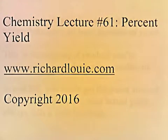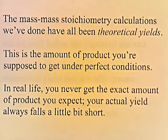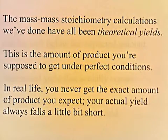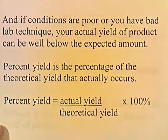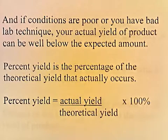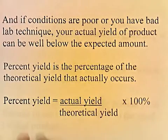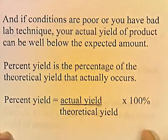Chemistry Lecture Number 61: Percent Yield. The mass-mass stoichiometry calculations we've done have all been theoretical yields — the amount of product you're supposed to get under perfect conditions. In real life, you never get the exact amount of product you expect; your actual yield always falls a little bit short. And if conditions are poor or you have bad lab technique, your actual yield can be well below the expected amount. Percent yield is the percentage of the theoretical yield that actually occurs: actual amount divided by expected amount, times 100%.